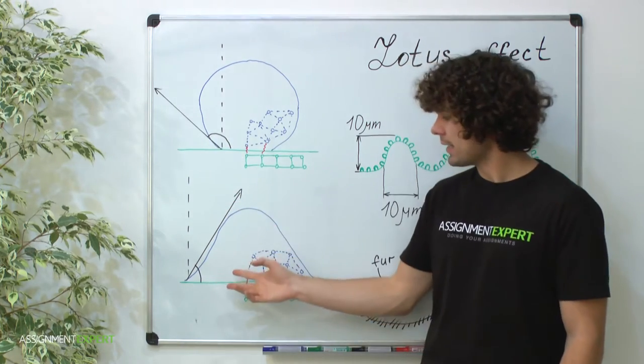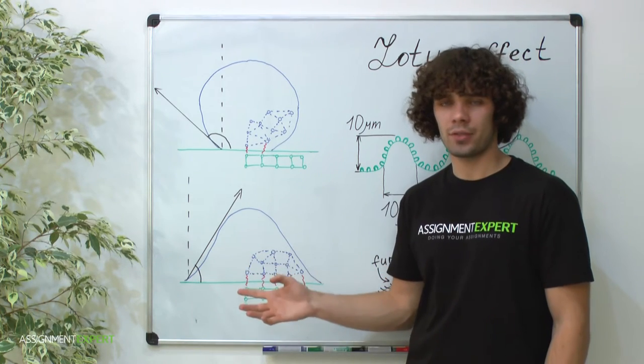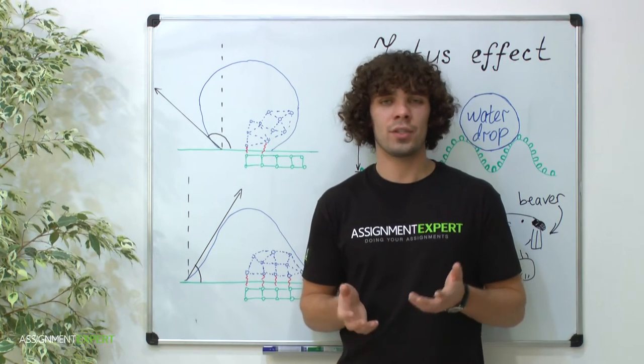However, in the second case, it does, and the contact angle is less than 90 degrees. Can these properties be controlled? The answer is yes.